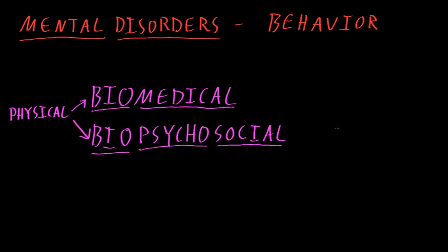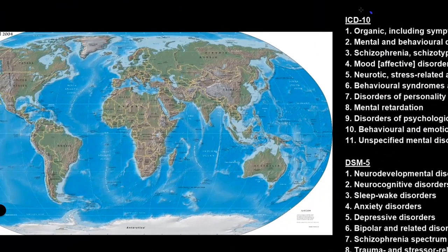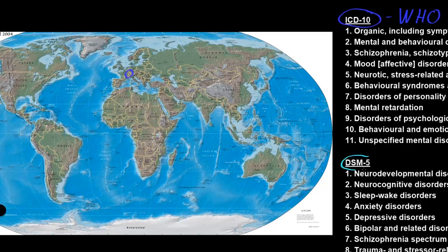As of 2014, when I'm making this video, there are two classification systems most commonly used for mental disorders: the ICD-10 and the DSM-5. The ICD-10 is short for the International Classification of Diseases, 10th Revision, from the World Health Organization (WHO), headquartered in Europe. The DSM-5 is short for the Diagnostic and Statistical Manual of Mental Disorders, 5th Edition, from the American Psychiatric Association (APA), headquartered in the United States.